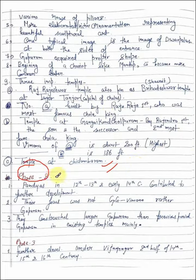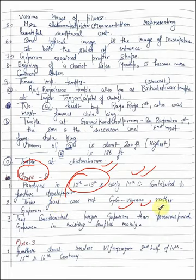Next phase starts which is Pandyas phase in 12th to 13th century AD. In early 14th century AD there was Pandya's development. Their focus was on Garbhagriha vimana rather than gopuram. But they built larger gopurams than previous period gopurams in existing temples. Meaning their focus was basically on the garbhagriha and vimana. They didn't build new temples much, but when they worked on existing temples, they improved gopurams.